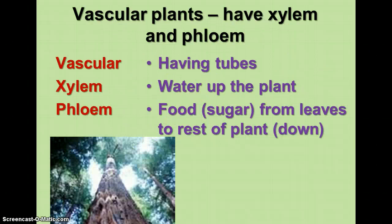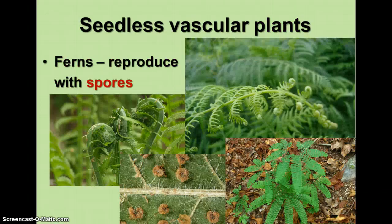Vascular plants do have xylem and phloem. The term vascular means having tubes. The xylem are the tubes that move water up the plant, and the phloem are the tubes that move food from the leaves down to the rest of the plant. The seedless vascular plants include the ferns — they have vascular tissue, xylem and phloem, but reproduce with spores rather than seeds.